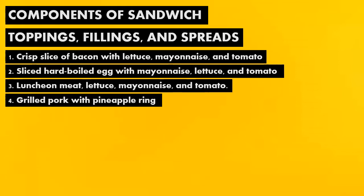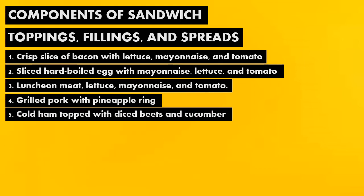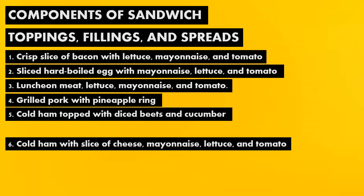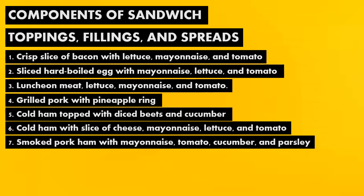Fourth, we have grilled pork with pineapple ring. And fifth, cold ham topped with diced beets and cucumber. Next, we have cold ham with a slice of cheese, mayonnaise, lettuce, and tomato. Also, we have smoked pork ham with mayonnaise, tomato, cucumber, and parsley.